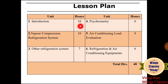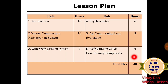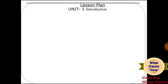Unit 1 covers ten lectures requiring ten hours. Unit 2 will be covered in ten hours. Unit 3 requires seven hours or seven lectures. Unit 4, Psychrometry, is covered in six hours. Unit 5, Load Calculation, is covered in nine hours. Unit 6, Refrigeration and Air Conditioning Equipment, is covered in six hours. The total number of hours required to complete all six units is 48 hours.